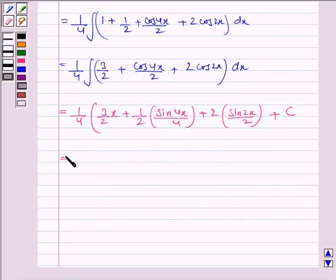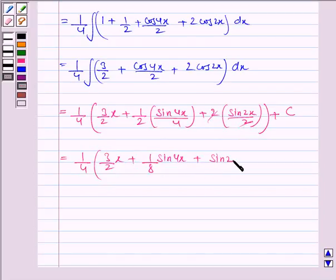So we have 1/4 times (3x/2 plus 1/8·sin4x plus sin2x) plus C.